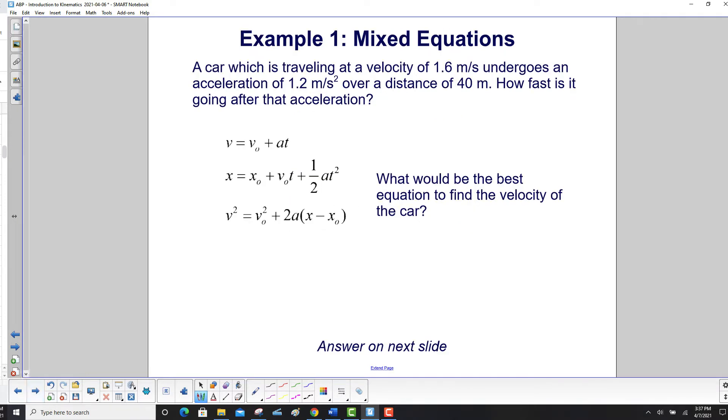Example 1. A car which is traveling at a velocity of 1.6 meters per second undergoes an acceleration of 1.2 meters per second squared over a distance of 40 meters. How fast is it going after that acceleration? What would be the best equation to find the velocity of the car?